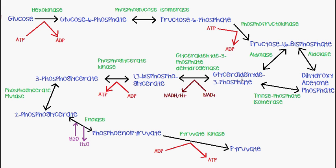Remember, there are two molecules of glyceraldehyde-3-phosphate, so the payoff phase occurs twice. That means we actually get 2 NADH from the dehydrogenase step, 2 ATP from phosphoglycerate kinase, and 2 ATP from pyruvate kinase. This is because fructose-1,6-bisphosphate splits into glyceraldehyde-3-phosphate and dihydroxyacetone phosphate, which is then converted into a second glyceraldehyde-3-phosphate by triose phosphate isomerase. So all payoff phase steps occur twice.